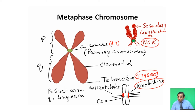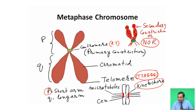Chromosomes have a short arm and a long arm. They are designated by P for the short arm and Q for the long arm. This is the structure of the metaphase chromosome.